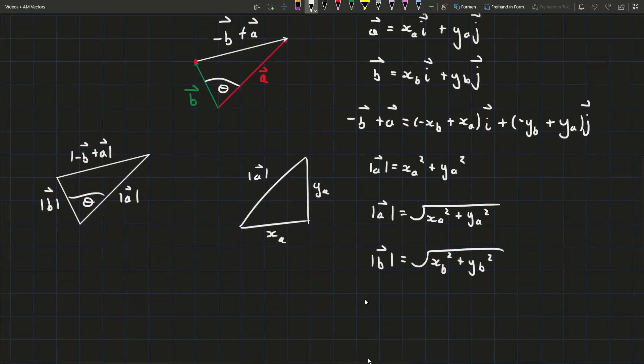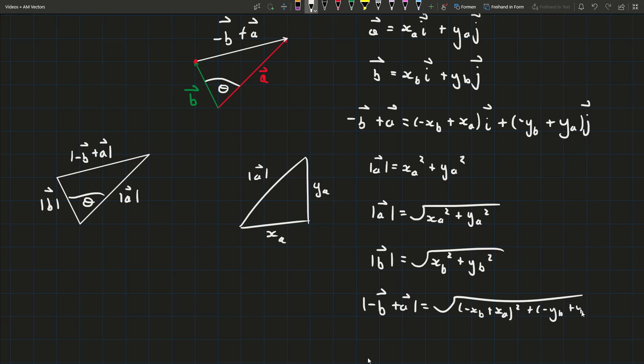Therefore the magnitude of vector minus b plus vector a will be the square root of (minus xb plus xa) squared plus (minus yb plus ya) squared. It's kind of like the distance formula in coordinate geometry and you can also see that because there's a minus in front of the b components and a plus in front of the a components so it all checks out.